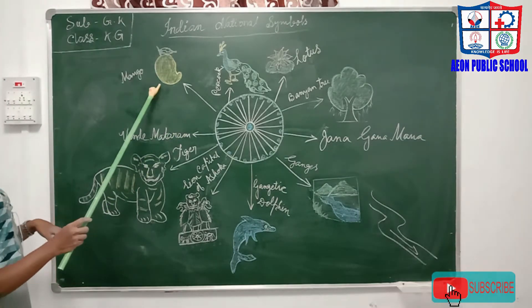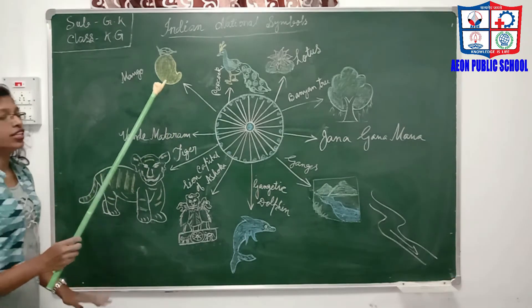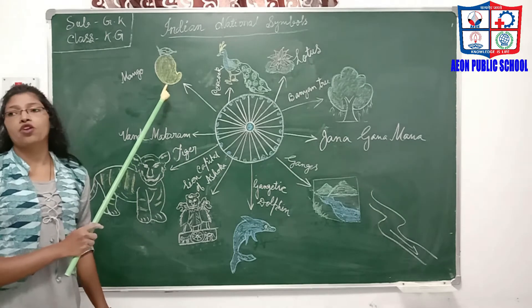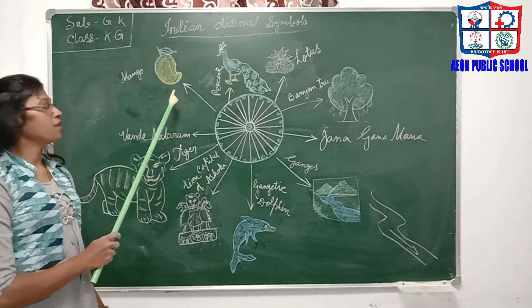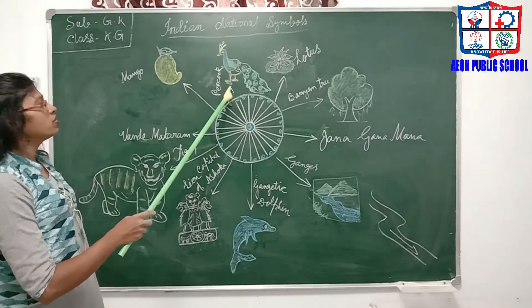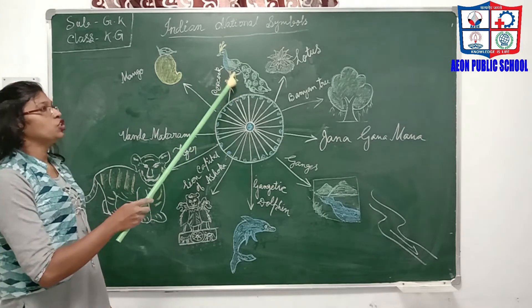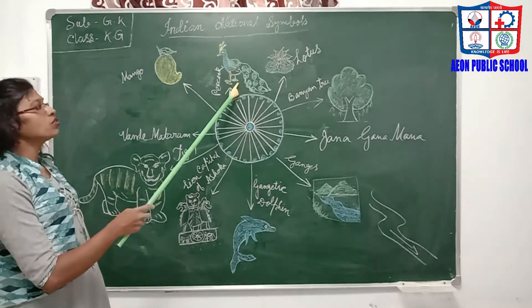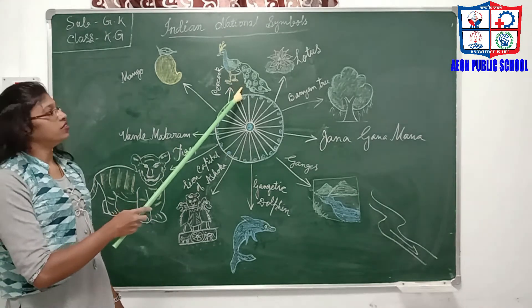The first one is the National Fruit of India, which is the Mango. Mango shows the tropical climate of India. The second one is the National Bird — it is the Peacock. It shows the beauty and elegance of our country.